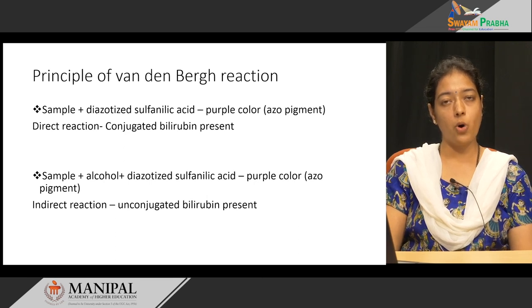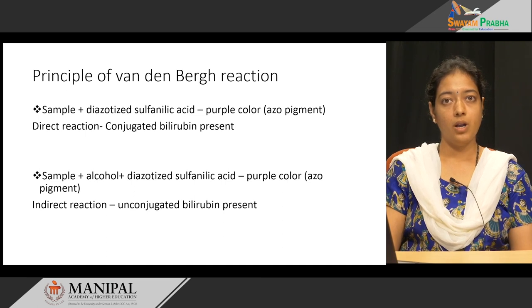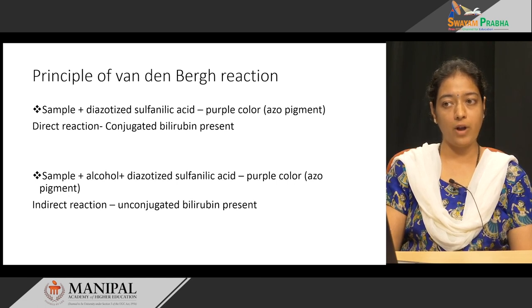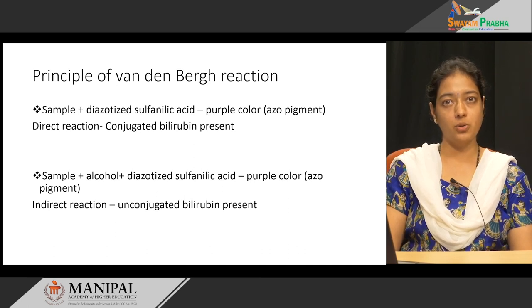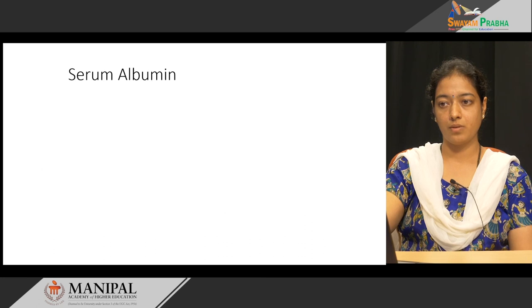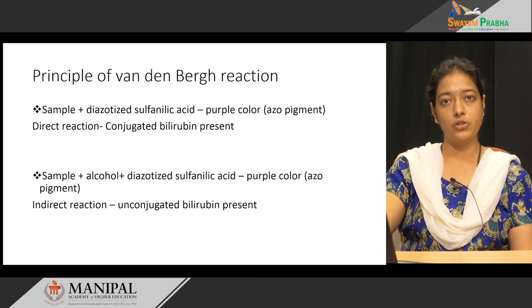Unconjugated bilirubin is water insoluble, which is why alcohol must be added for it to react with the reagent. Since conjugated bilirubin is water soluble, it reacts with the Van den Bergh reagent directly and is therefore called direct bilirubin. Unconjugated bilirubin requires an extra reagent, making it the indirect bilirubin. The purple color intensity is measured using a colorimeter to estimate bilirubin concentration.